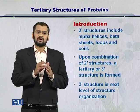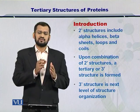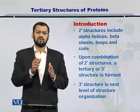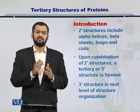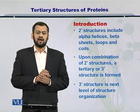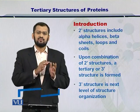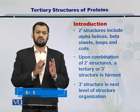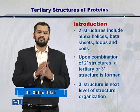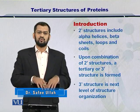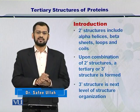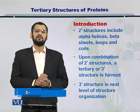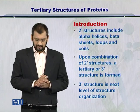These structures include substructures like alpha helices, beta sheets, coils and loops. Now, these alpha helices, beta sheets, coils and loops, they come together to make the overall protein structure, and that is the tertiary structure of proteins.